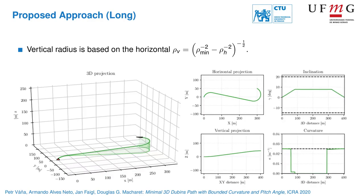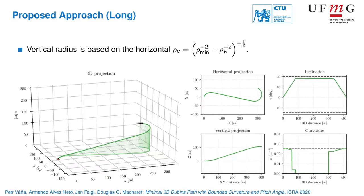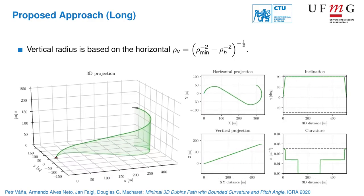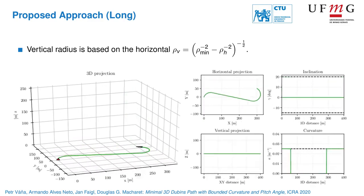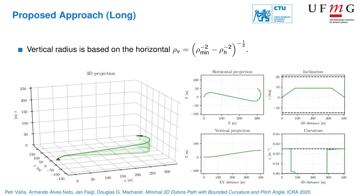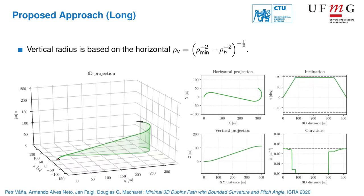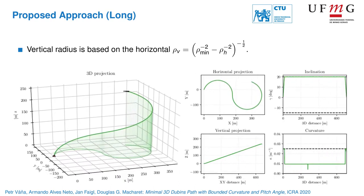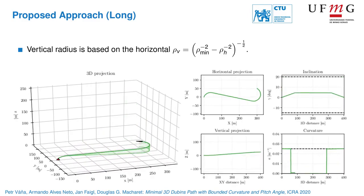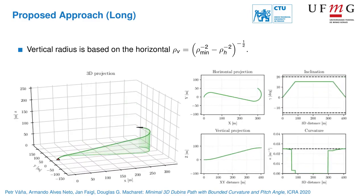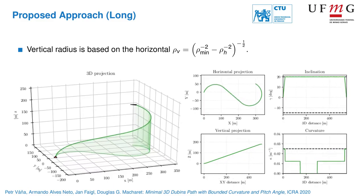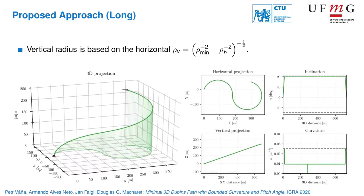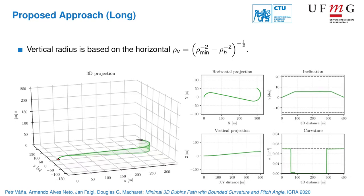In the proposed method, the vertical turning radius is determined based on the horizontal radius. Thus, the problem is reduced to a single variable optimization of the horizontal radius. We need to find a feasible solution first and thus the horizontal radius is iteratively increased until the path is long enough for the vertical part to gain the requested altitude.